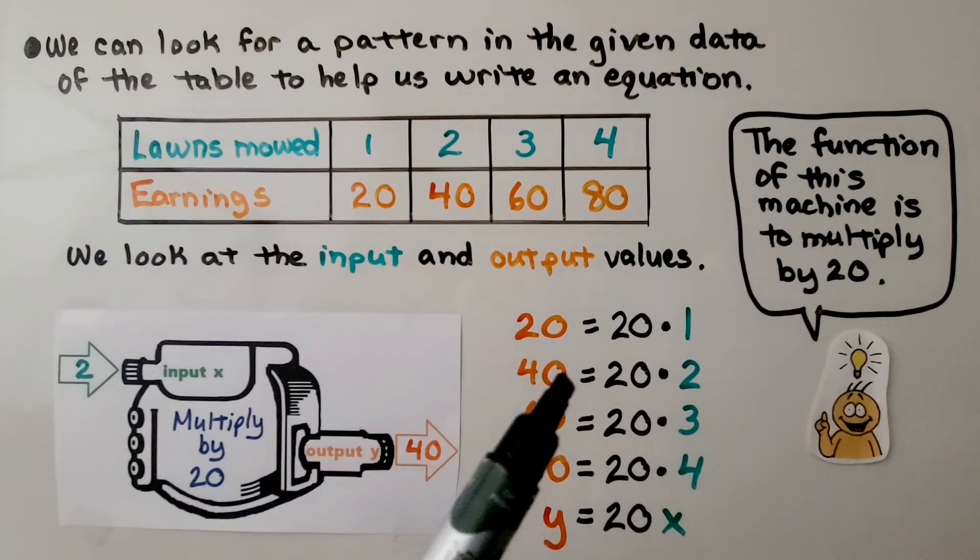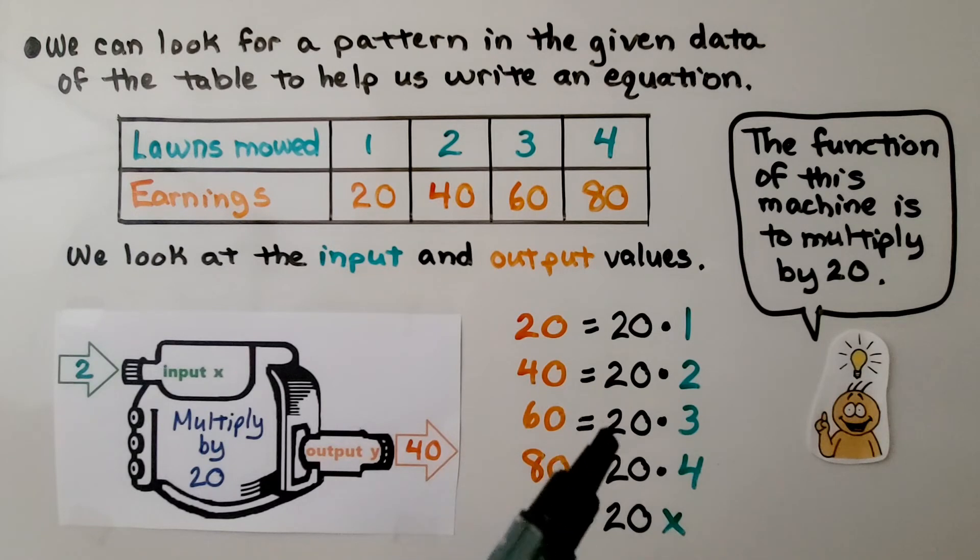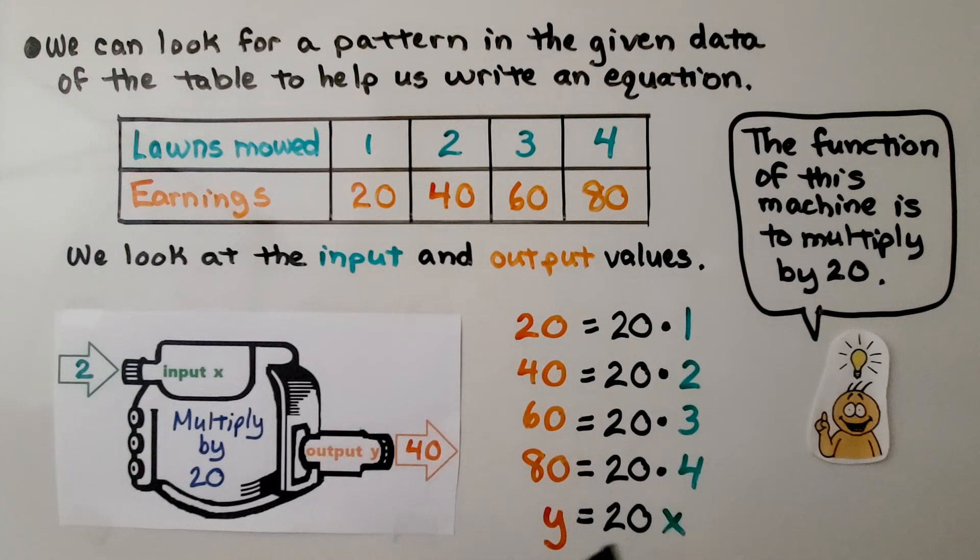40 is equal to 20 times 2. 60 is equal to 20 times 3. 80 is equal to 20 times 4. We see the pattern. This is going up by 1 and the Y value is going up by 20.